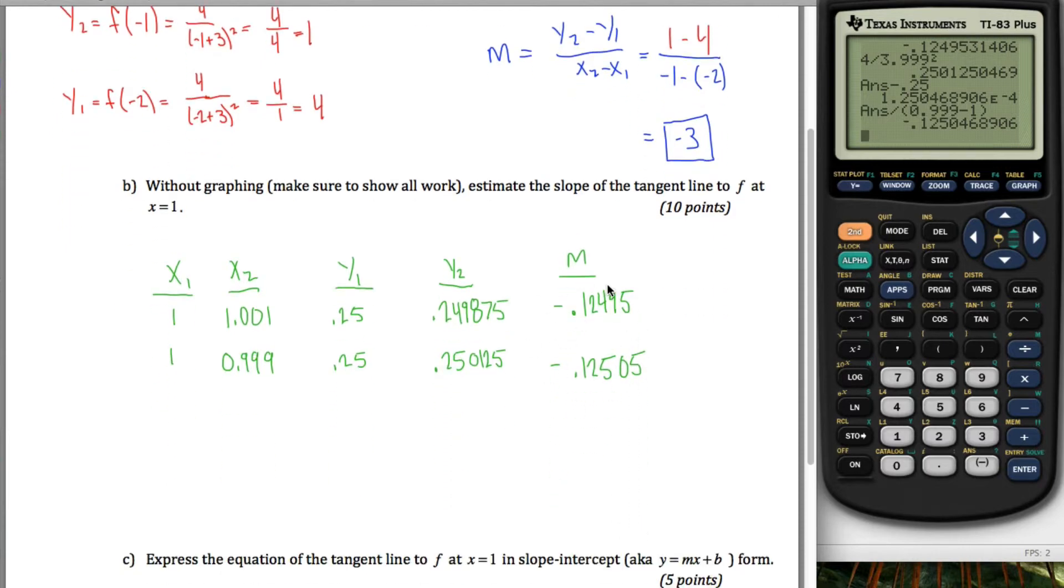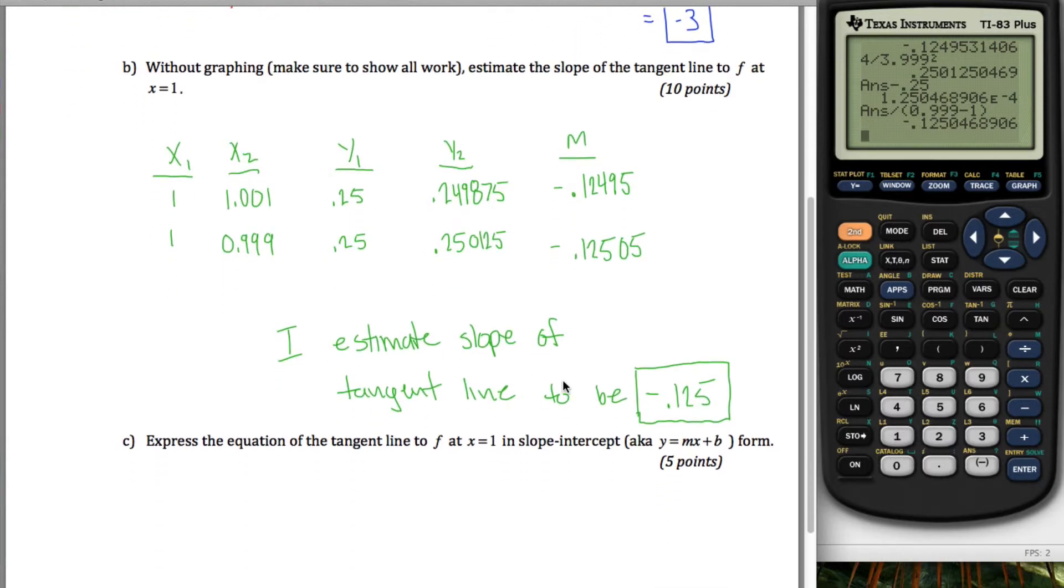So then I look at these two values, and I recognize that one of the slopes is a little bit less than the slope of the tangent line, and one of the slopes is a little bit more than the slope of the tangent line, and looking at them, it looks like they're pretty close to negative .125. So I'm going to say I estimate slope of tangent line to be negative .125. Negative 1 eighth if you prefer fractions. And your work up here might look a little bit different because you might have chosen different values here, but hopefully you'll come up with the same answer here.